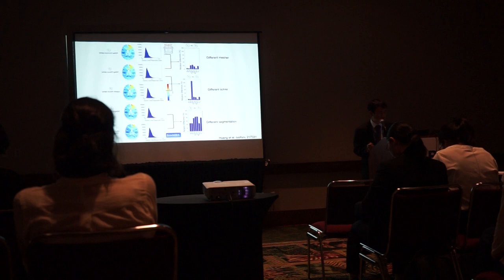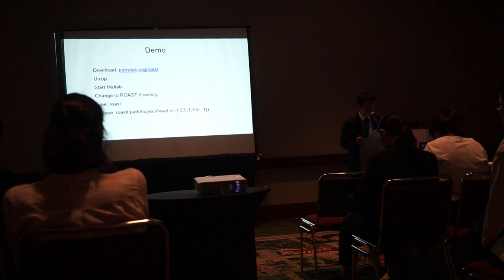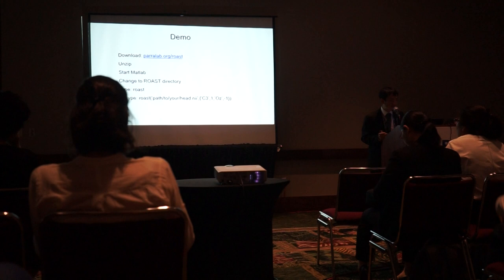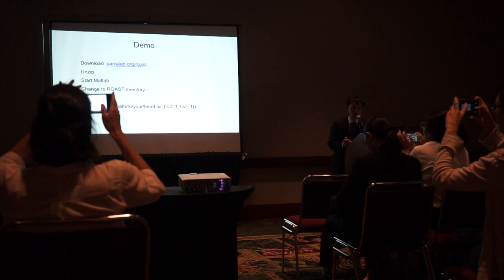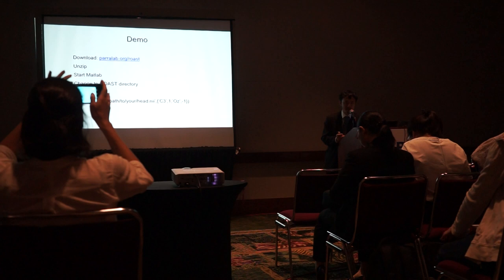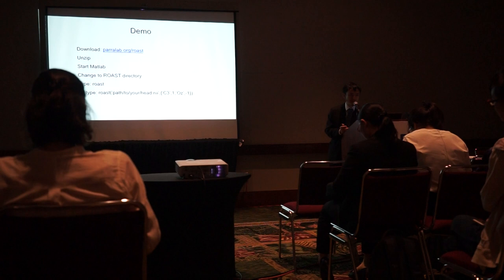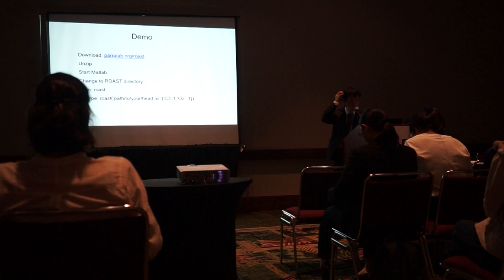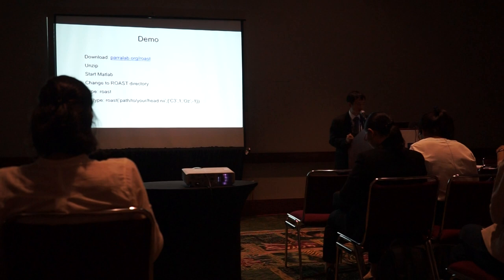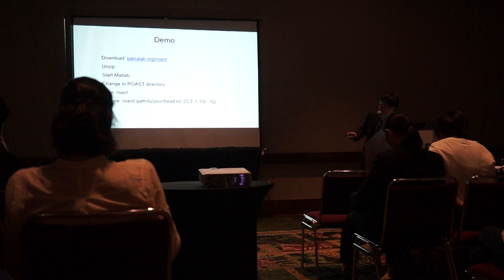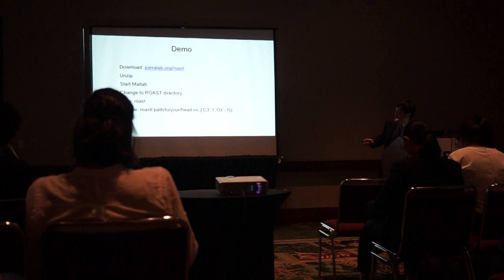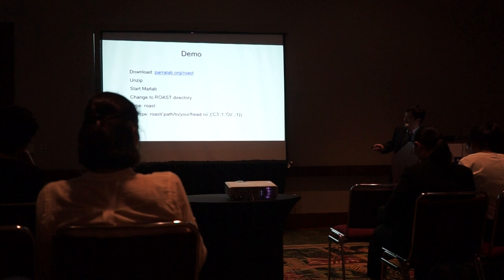Before I get to that, I want to do a demo to show how to use this pipeline, ROAST. First you go to the website, download it, unzip it, and you're done with installation. Then you start MATLAB, go to the ROAST directory, and if you just want to use everything by default, you just type 'roast' and hit enter. That will give you a default simulation with the anode at FP1 and cathode around P4. You can also type 'roast' with the path to your own MRI file and some configuration arguments like mesh quality.